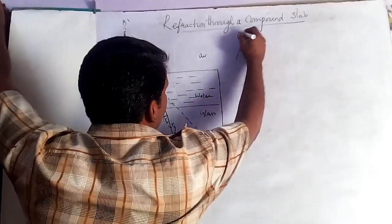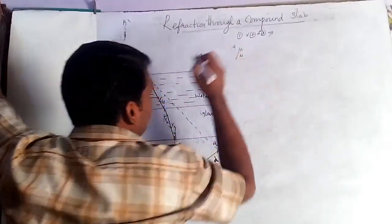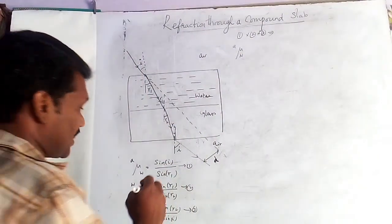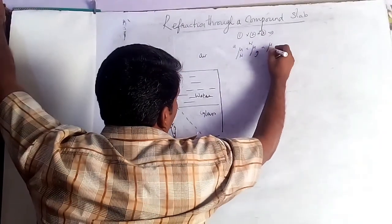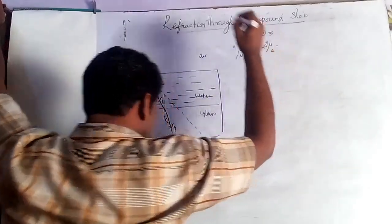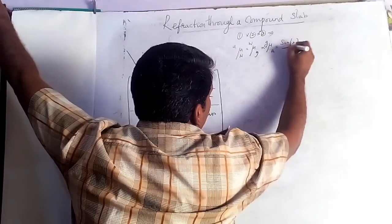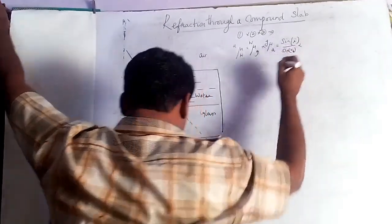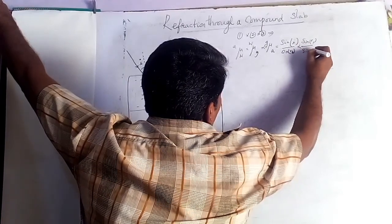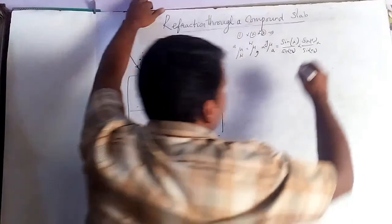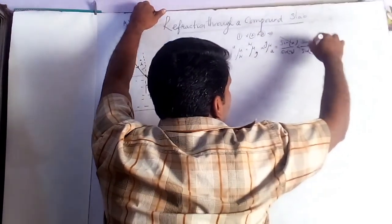We multiply all three equations 1, 2, and 3 together. The left-hand side is the refractive index of water with respect to air, multiplied by the refractive index of glass with respect to water, multiplied by the refractive index of air with respect to glass. The right-hand side is sin I over sin R1, multiplied by sin R1 over sin R2, multiplied by sin R2 over sin I. Sin I cancels, sin R2 cancels, and sin R1 cancels.